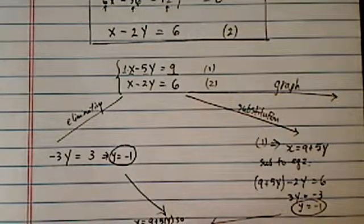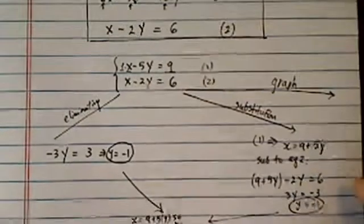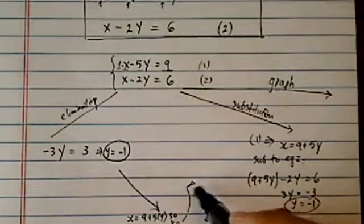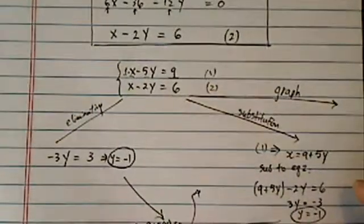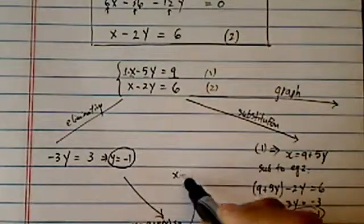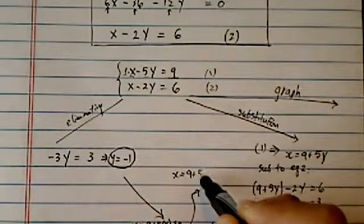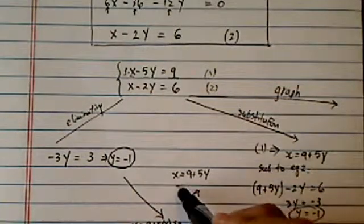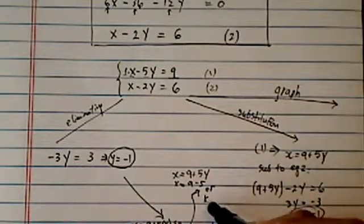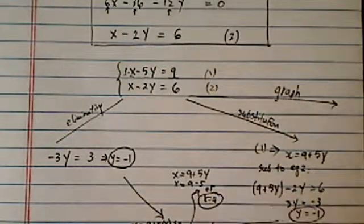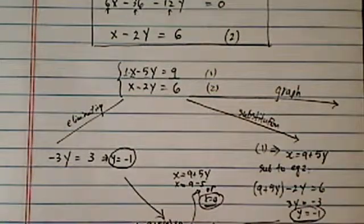So, x is equal to, I'm squeezing here. Let's put it up here so you can see it. So, here I had x is equal to 9 plus 5y. y is minus 1, so x is equal to 9 minus 5, or x is equal to 4. So, here's both methods works out.